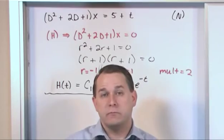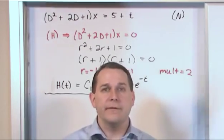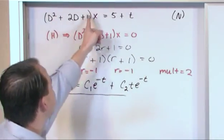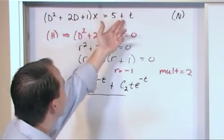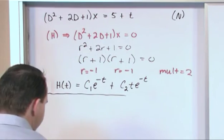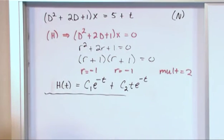p of t is just some, that's why it's called particular, it's just some function, any function, that satisfies the original differential equation. Right? So it takes into account the forcing function on the right-hand side. So we're going to use our annihilator method to do that. So before we can actually do it, we need to find